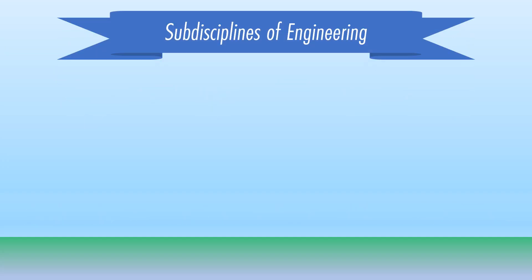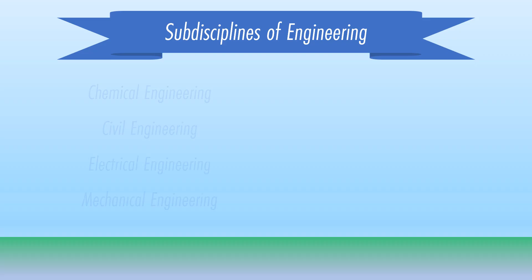The engineering branch can be divided into four main disciplines: chemical, civil, electrical, and mechanical.